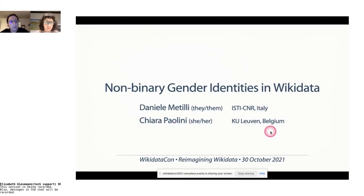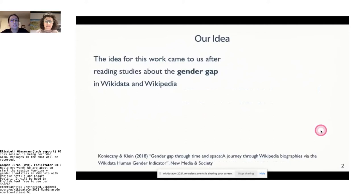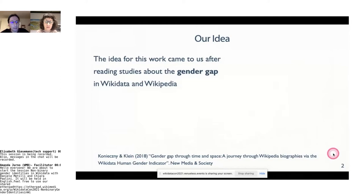The study we're presenting today is about non-binary gender identities in Wikidata. The idea for this work came to us after reading previous studies about the gender gap in Wikidata, Wikipedia, and other Wikimedia projects — especially the work by Maximilian Klein, who published a few papers about this topic, looking at the gender gap between the representation of men and women in these projects.